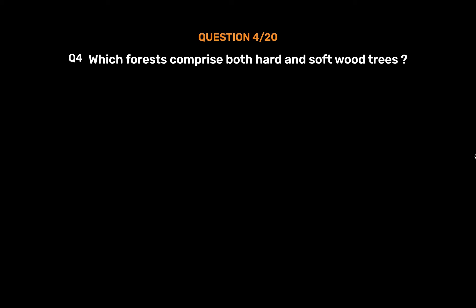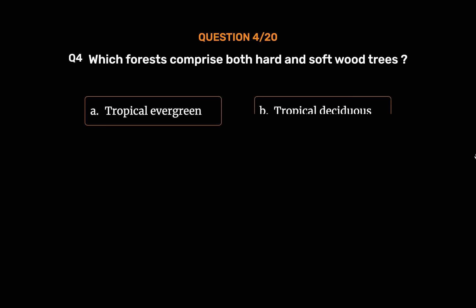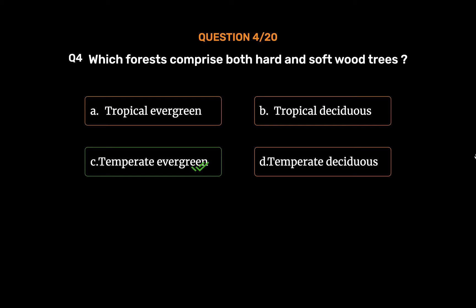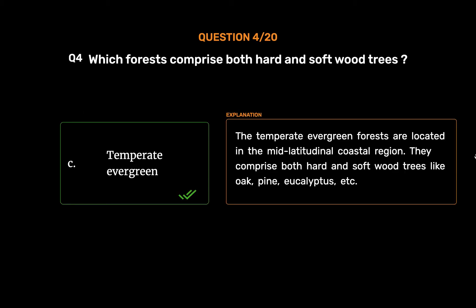Question number 4: Which forests comprise both hard and soft wood trees? Option A: Tropical evergreen. Option B: Tropical deciduous. Option C: Temperate evergreen. Option D: Temperate deciduous. The correct answer is Option C: Temperate evergreen. The temperate evergreen forests are located in the mid-latitudinal coastal region. They comprise both hard and soft wood trees like oak, pine, eucalyptus, etc.